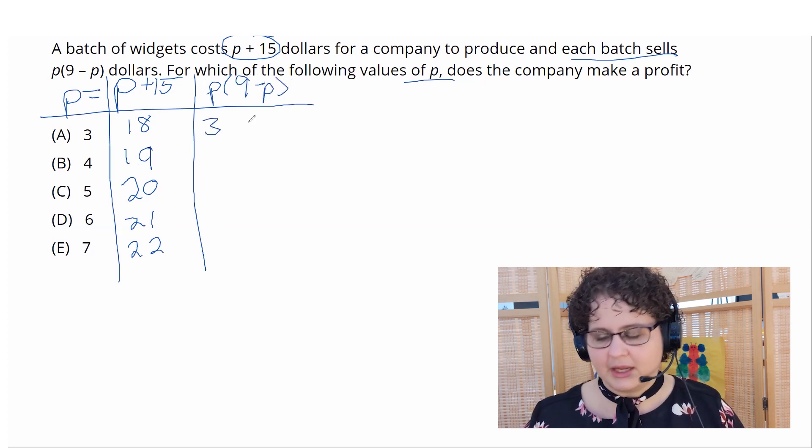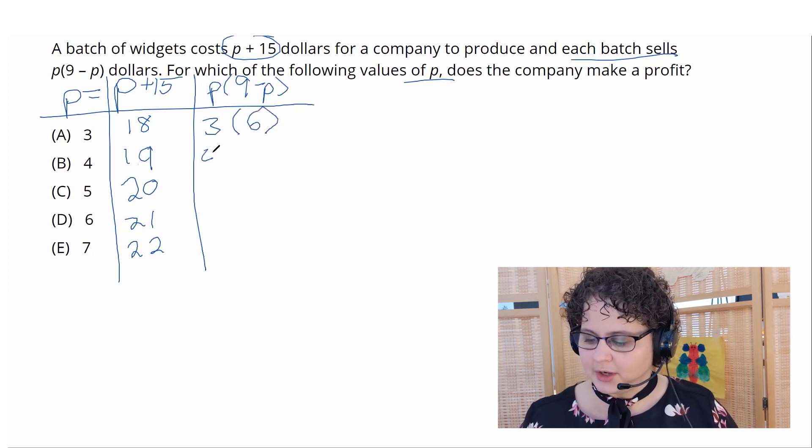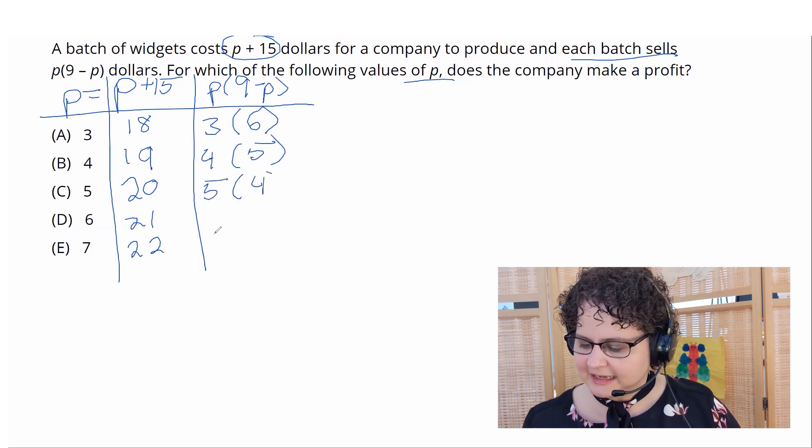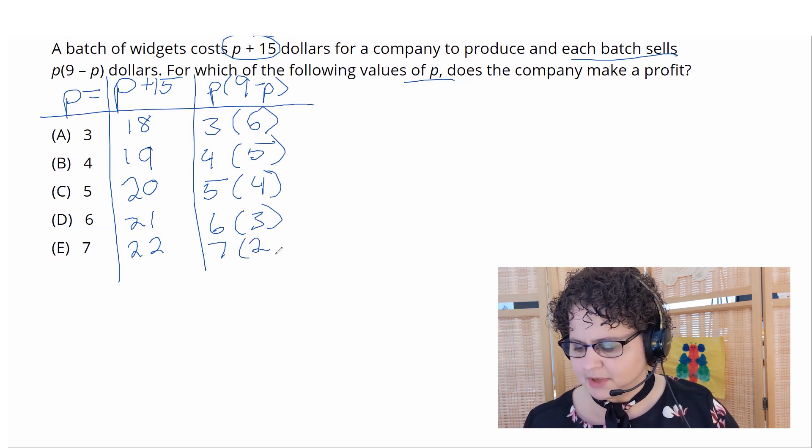So if p is 3, 9 minus p is 6. If p is 4, 9 minus p is 5. If p is 5, 9 minus p is 4. Again, very, very easy math. I am very sure I'm not making a mistake.